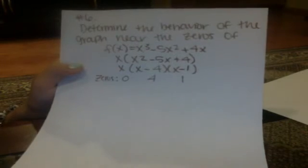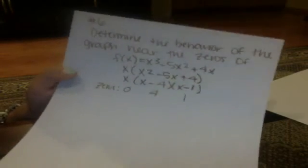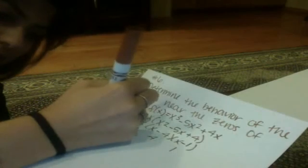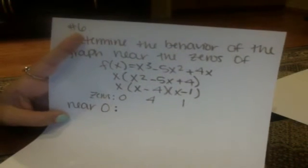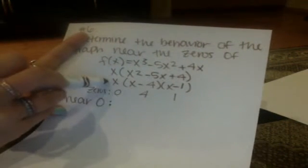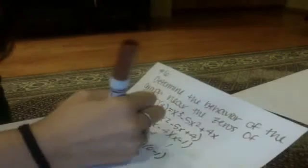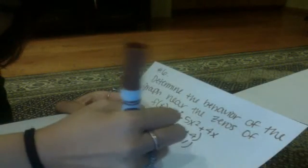Now we have to find the behavior of the graph near each zero. To find it near the first zero, which is 0, you're going to plug 0 in for everything besides the x that would make the equation 0. So you're going to leave this x as x and plug in 0 for the rest of the x's. So it's going to be x, and then 0 - 4, 0 - 1. Then it's going to be x(-4)(-1), which is a positive 4, so the answer is 4x.